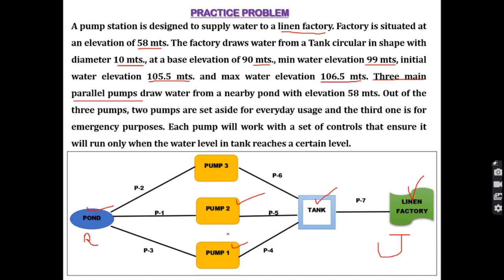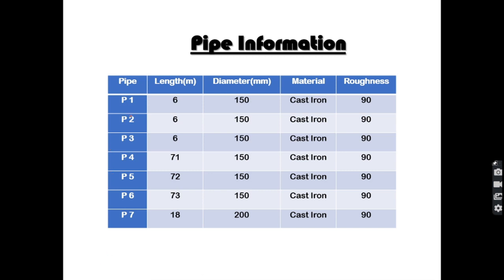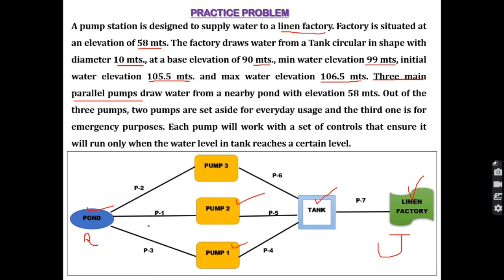Looking at the network, we will draw it in WaterGEMS: the pond is represented as a reservoir, the three pumps are pump elements, the storage is a tank, and the linen factory is a junction. All of these are connected by pipes. The numbering of pipes and pumps will match those given in the problem so it is easier to follow the given nomenclature.